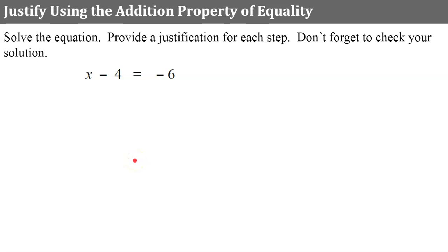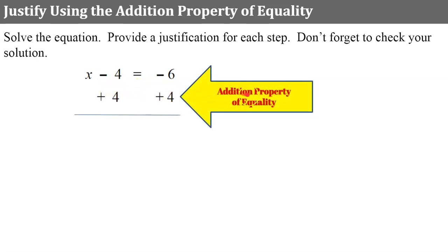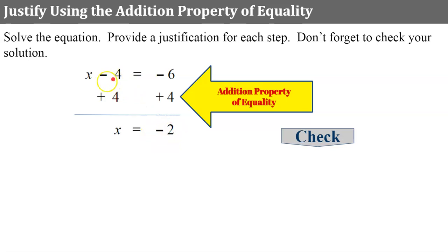Now let's show how to justify using the addition property of equality. We're going to solve the equation, provide a justification, and check our solution. I identify the variable and what is happening to it — we're subtracting 4. The inverse of subtract 4 is to add 4 to both sides; my justification is the addition property of equality. Simplifying each side, we get x is equal to negative 2, since negative 6 plus 4 is negative 2. To check, I replace x in the original equation with negative 2: negative 2 subtract 4 equals negative 6. Adding the opposite, negative 2 plus negative 4 is negative 6, and it checks.